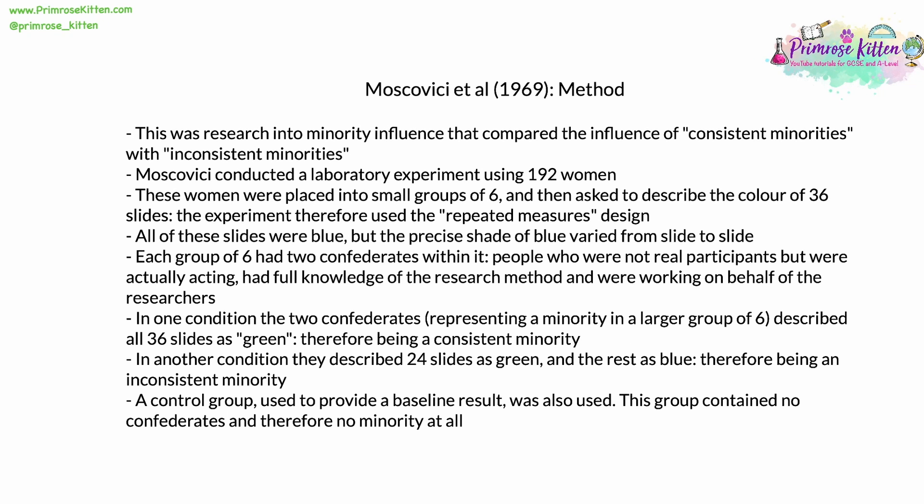In 1969, a piece of research was done by Moscovici, who led a team of researchers. This was research into minority influence that compared the influence of consistent minorities with that of inconsistent minorities — the variable was therefore the consistency of the minority. Moscovici conducted a laboratory experiment by randomly selecting 192 women in groups of six, who were then asked to describe the colour of 36 slides.